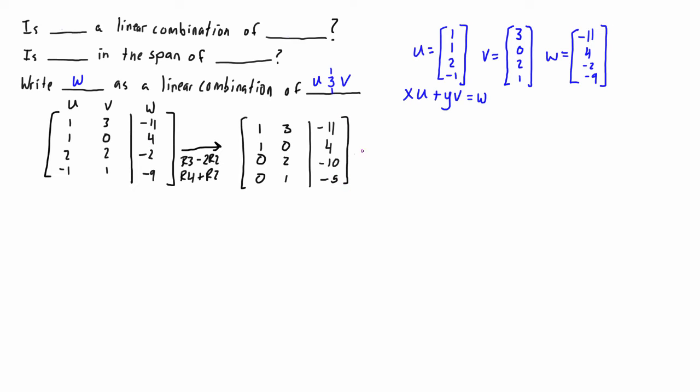The next elementary row operations that we can do would be r1 minus r2, we can knock out that 1 there, and then let's divide row 3 by 2. When we do this we have 1 minus 1 that's going to be a 0, 3 minus 0 that stays a 3, negative 11 minus 4 that brings us to negative 15. Row 2 is unaffected, and r3 we're dividing by 2 so that stays as a 0, that goes to 1, and that becomes negative 5. R4 is 0, 1, and negative 5.